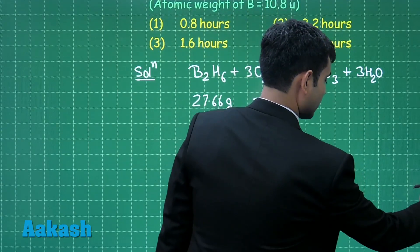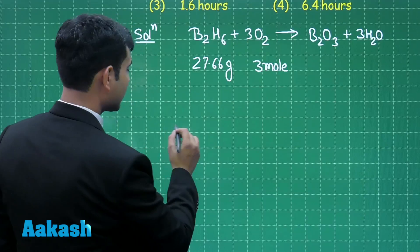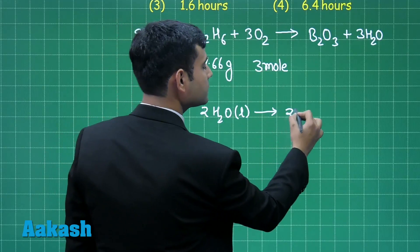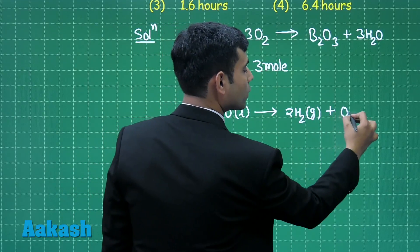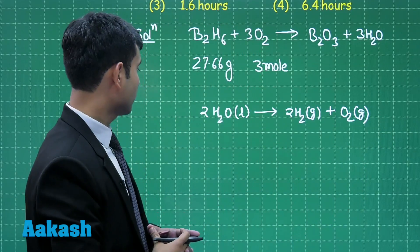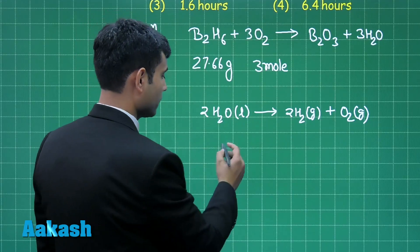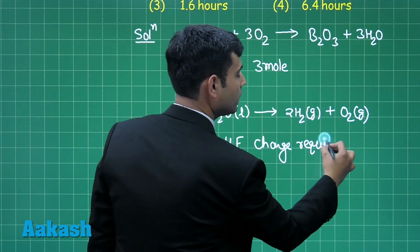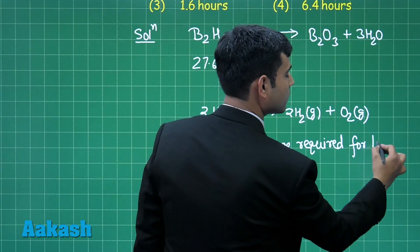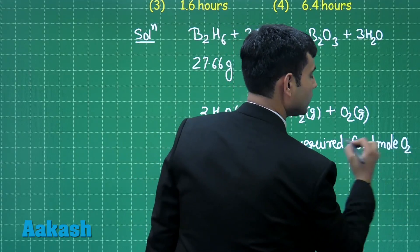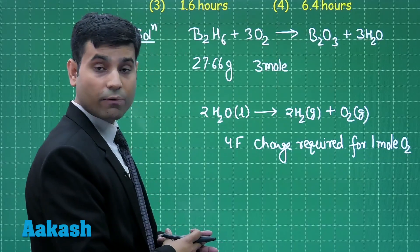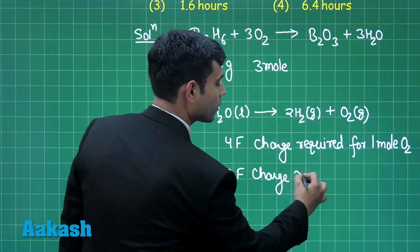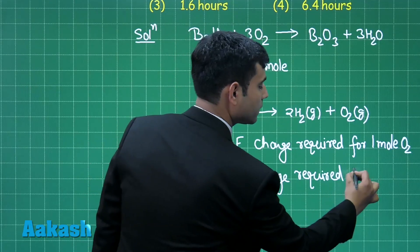Then, if we electrolyze water, in the electrolysis process of water, 2 moles of water gives us 2 moles hydrogen gas and 1 mole of oxygen gas. In this complete process, 4 faraday charge is consumed. So, 4 faraday charge required for 1 mole oxygen. Now, if I talk about 3 moles of O2, then 12 faraday charge is required for 3 moles of O2.